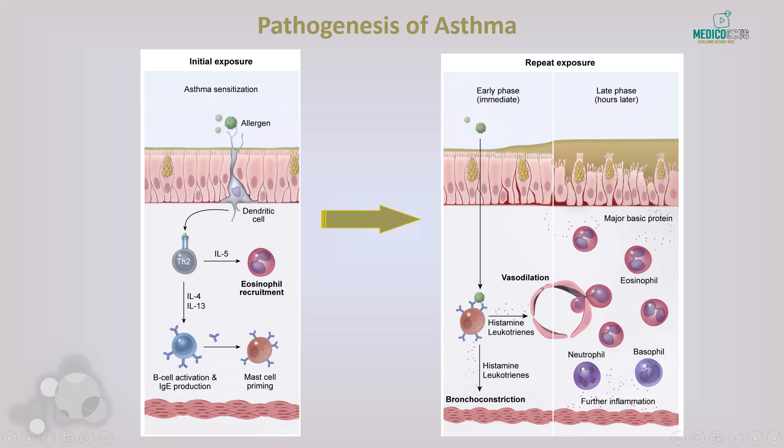In summary, asthma starts with allergen sensitization and IgE priming during initial exposure. On repeat exposure, the early phase involves mast cell degranulation causing bronchoconstriction and vasodilation. The late phase brings in more inflammatory cells, leading to persistent airway inflammation and further exacerbating asthma symptoms. This whole process underscores why managing inflammation with medications like corticosteroids is crucial in preventing asthma attacks.